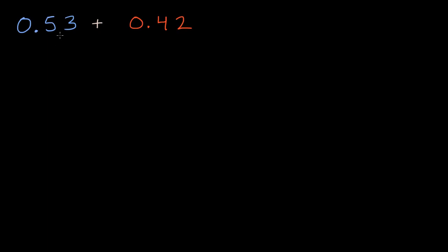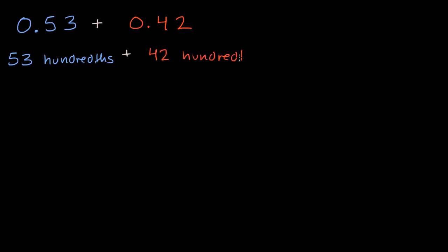One way to think about it is you could say that this is 53 hundredths. You could read this as either five-tenths and three-hundredths, or 53 hundredths. And to that, you're going to add 42 hundredths. So if I have 53 of something and I'm going to add 42 of that same something to it, what am I going to get?